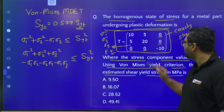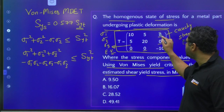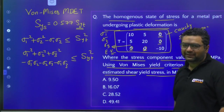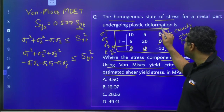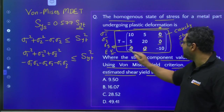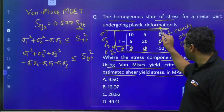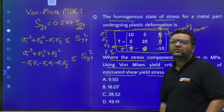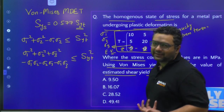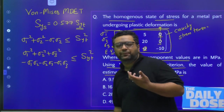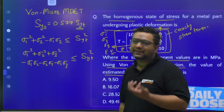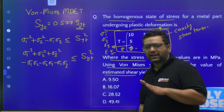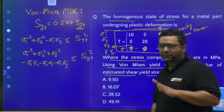Since these shear components are 0 in the Z-direction on the Z-face, all shear components are zero. When shear components are zero, that plane is said to be a principal plane. So we can say directly that the Z-face is a principal plane.